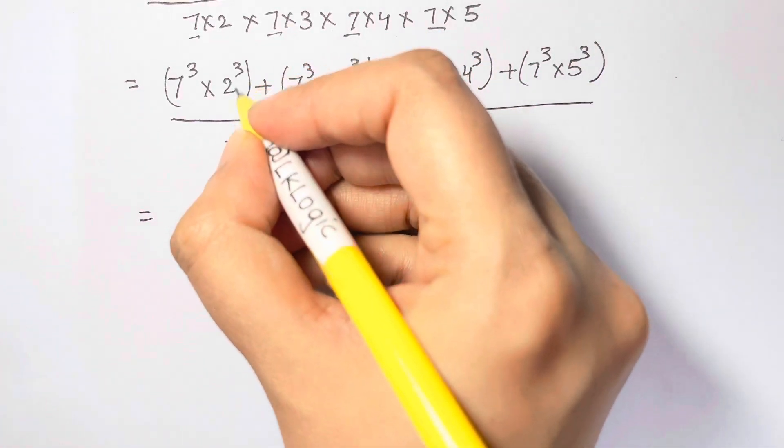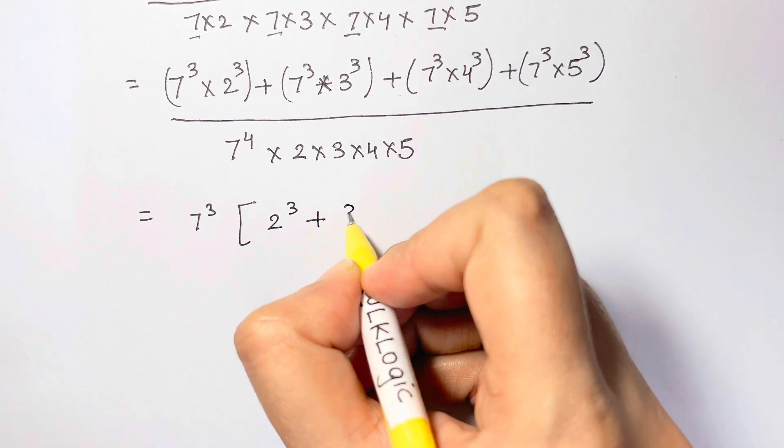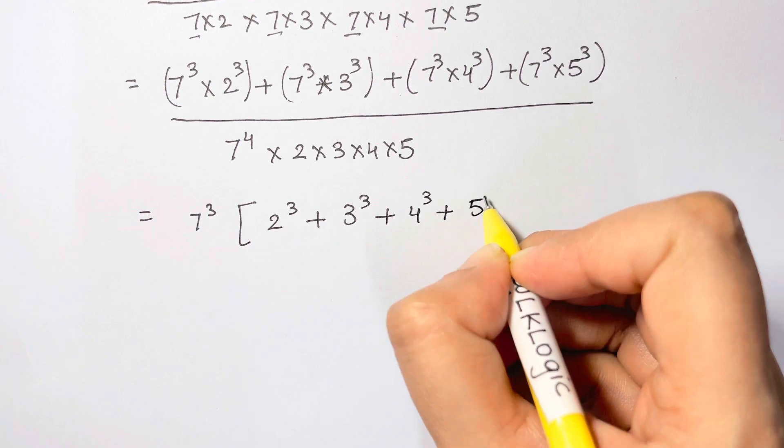7 cube, and I'm left with 2 cube, plus 3 cube, plus 4 cube, plus 5 cube.